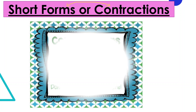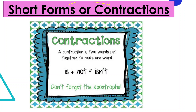Now let us know what contractions are. Listen to me very carefully — if you attentively listen, you will master this. You will learn how to use contractions in a sentence. So: a contraction is two words put together to make one word. Make sure you don't miss this — two words joined together to make one word.